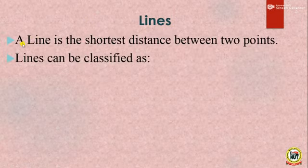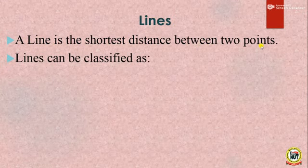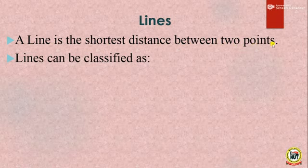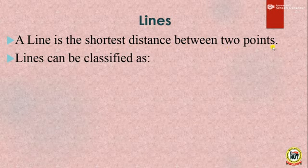Lines. A line is the shortest distance between two points. The shortest distance between two points is referred to as a line.